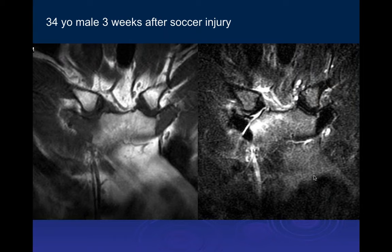34-year-old male with three weeks history from a soccer injury. On PD fat-sat and fluid-sensitive images, there appears to be a fracture through what looks like the first rib or clavicle — actually both appear involved with a minimally displaced or non-displaced fracture from the sternum. There's a little separation at the joint space and edema.